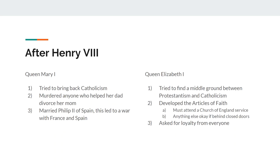After Henry, Edward does become king — he's Edward VI — but he dies very young, before he's 18. Queen Mary is going to become queen in 1553 and she's going to try to bring back Catholicism. This is the daughter of Catherine of Aragon, raised Catholic. She's going to murder anyone who helped her dad divorce her mom, including several members of the church. And then, just like a thumb in the eye, she marries King Philip II of Spain, which is going to lead to a war between France and Spain and ultimately the removal of Queen Mary as queen.